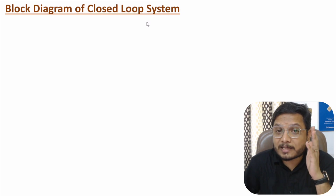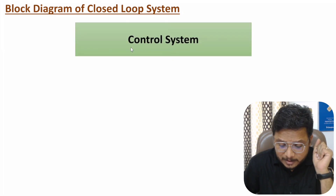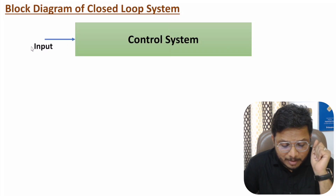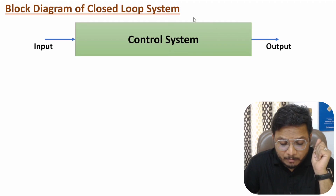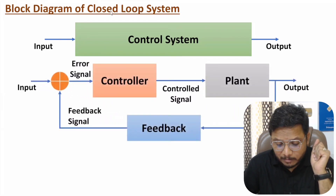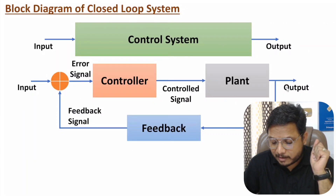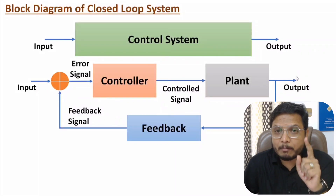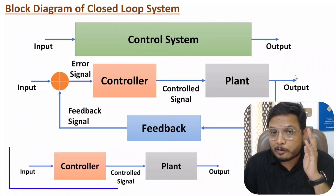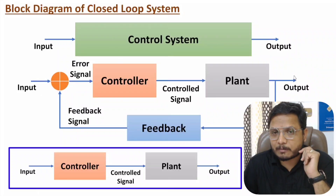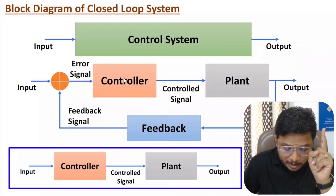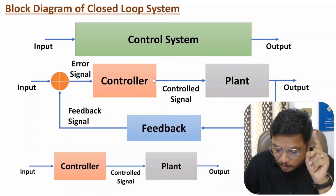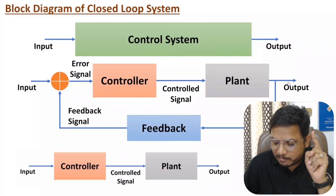First of all, one should know what is a control system. In a control system, we give input and based on that input the system generates desired output. If you see the detailed block diagram of closed loop control system, we provide input here and obtain desired output here. In open loop control system, input was given to the controller, then a control signal was given to the plant, and then we had output.